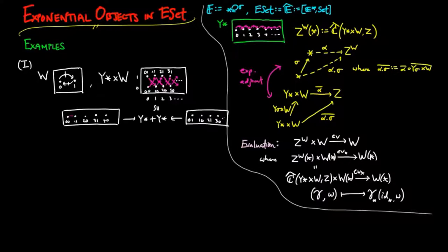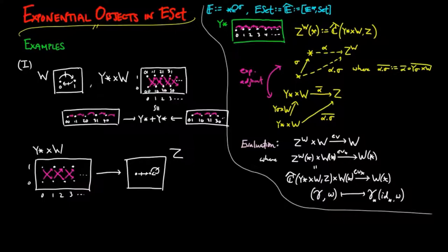We can untangle this object to obtain two copies of the representable object, so the product of the representable in W is seen to be isomorphic to the binary coproduct of representables. Let's now consider the exponential object Z to the W for another evolving set Z with two figures A and B and a process which takes A to B and fixes B.